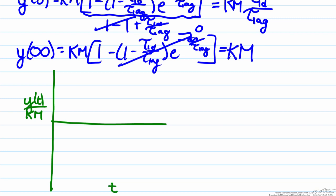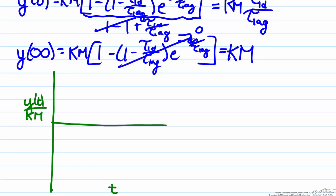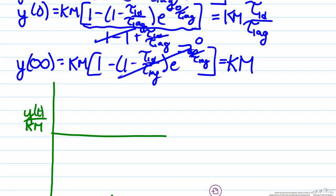An important point to note here is the fact that since we've normalized it by km, the system will start at the ratio, if we go back looking up here, it will start at the ratio of tau lead over tau lag, whatever that may be. And they will all converge to km, so since we have normalized by km, that means that here the systems will all converge to one.